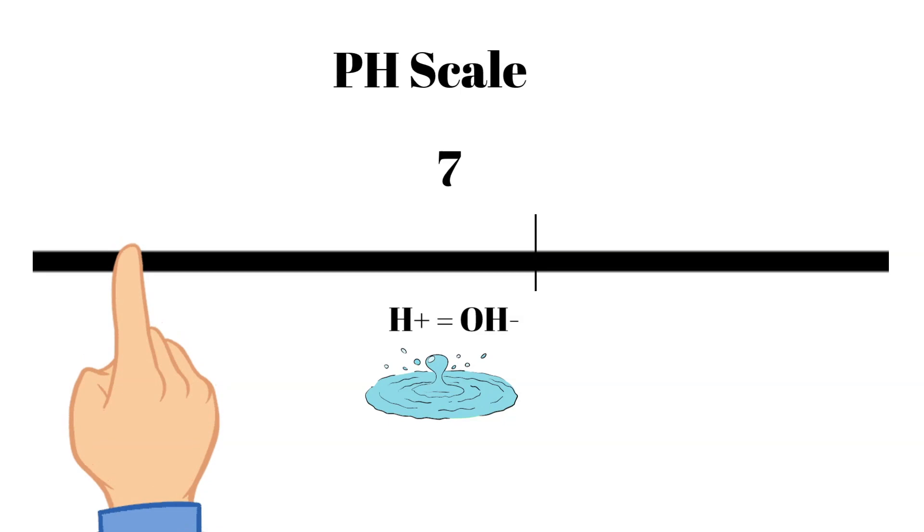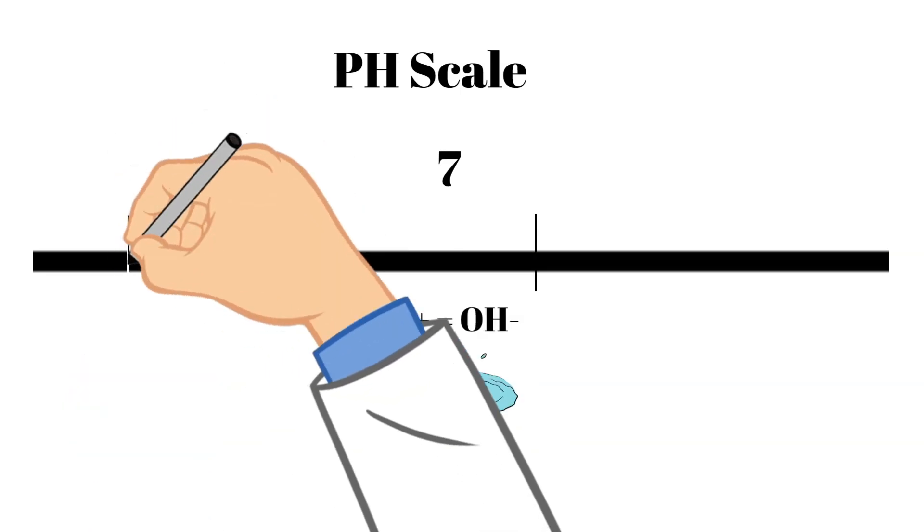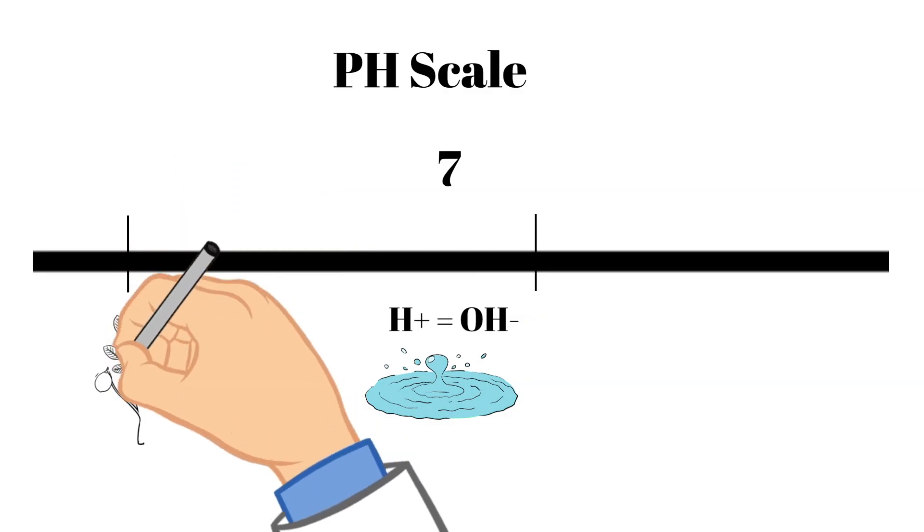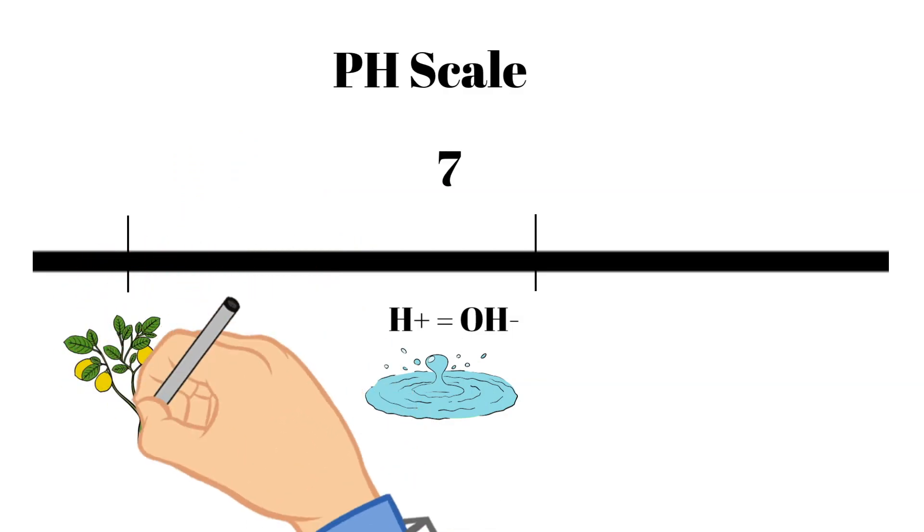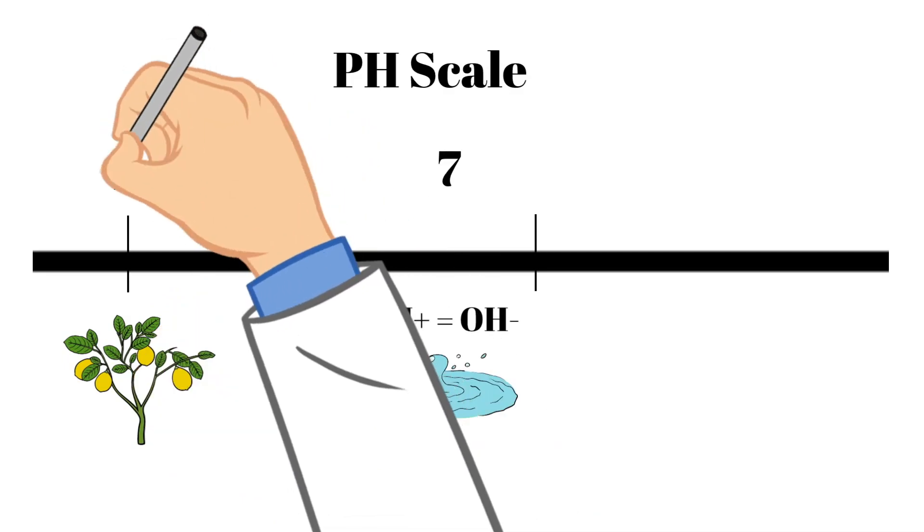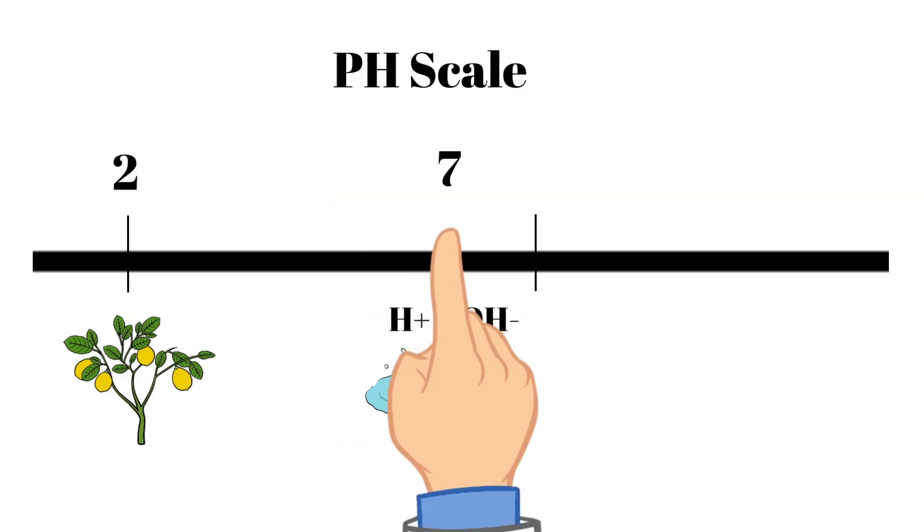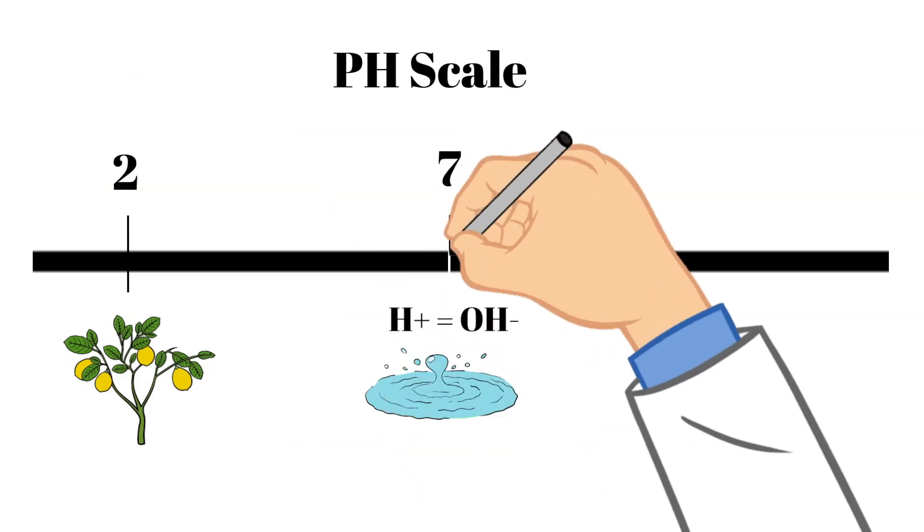Going to the left of pH seven, anything less than seven are going to be considered acidic. And as it goes down the pH scale, the more hydrogen ions and the more acidic something becomes. So lemons, we know lemons are quite acidic. They fall at about two.